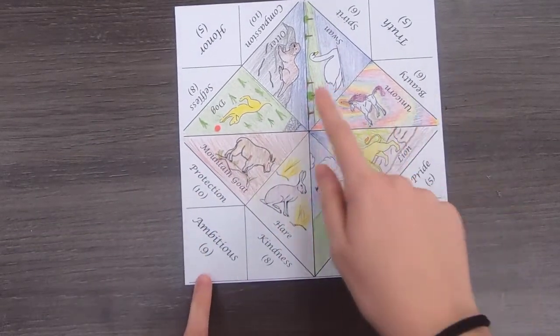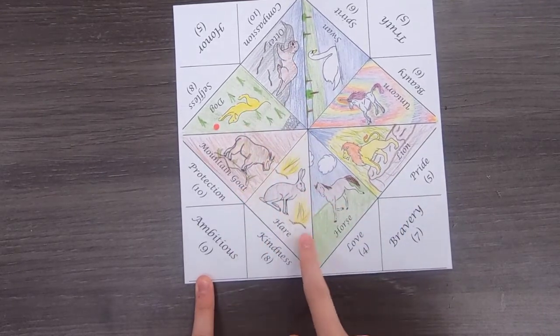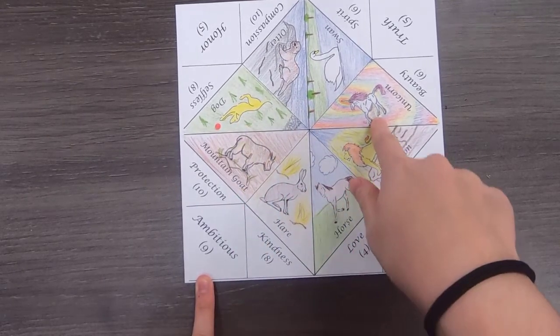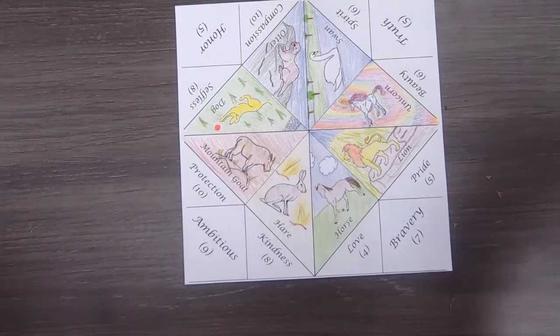And the options are otter, dog, mountain goat, hare, horse, lion, unicorn, and swan. All right, let's get started.